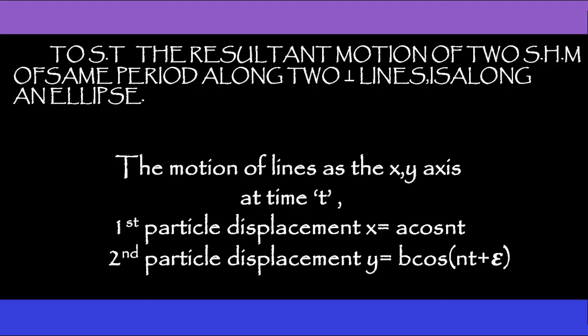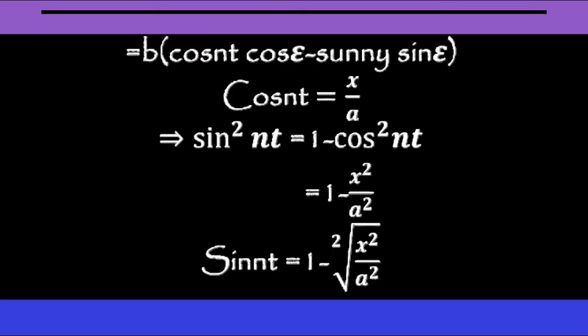The third topic: the resultant motion of two SHMs of the same period along two perpendicular lines lies along an ellipse. Taking the x and y axes, at time T the first particle has displacement x equal to A cos(nt), and the second particle has displacement y equal to B cos(nt plus epsilon). Expanding using cos(A plus B) equals cos A cos B minus sin A sin B.